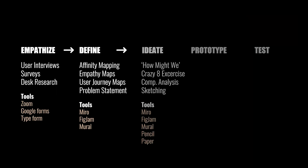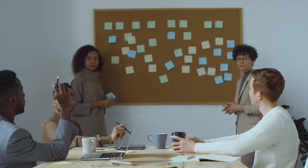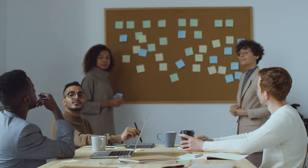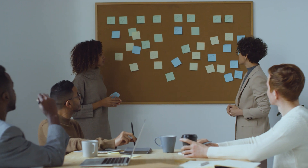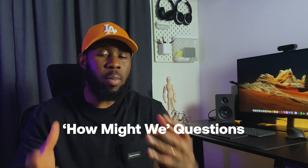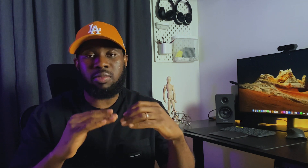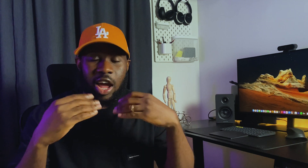Next, we move to the ideation stage where we generate ideas that can solve the problems identified at the previous stage. If you're working within a team, this is when you bring other members together to brainstorm ideas and solutions in a workshop setting. I like kicking off my ideation stage with How Might We Questions. How Might We Questions help me break up the problem statement into smaller questions that can create conversations and help the team generate more ideas.